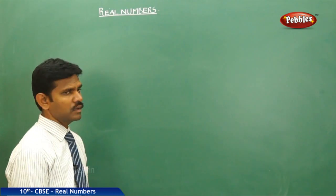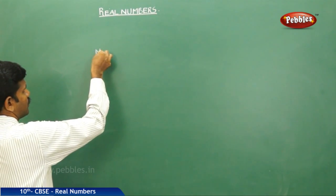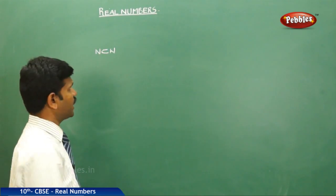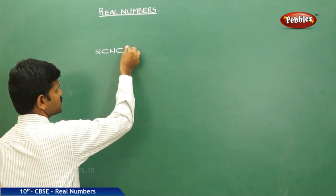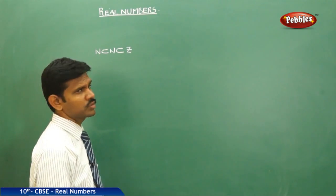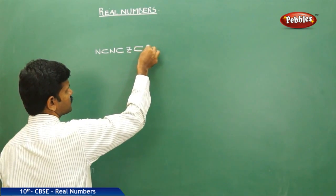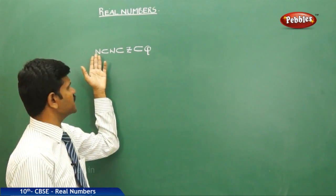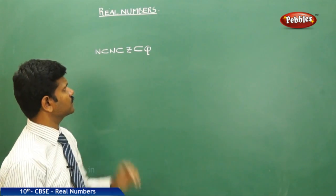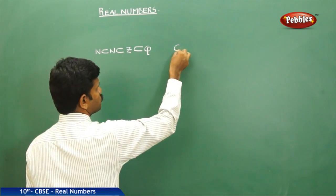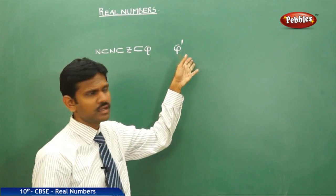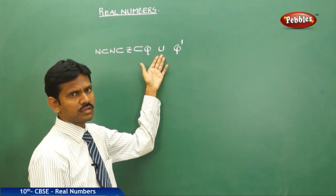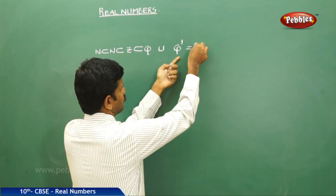From our previous knowledge, we can say that all natural numbers are whole numbers — natural numbers is a subset of whole numbers. All whole numbers are integers — whole numbers is a subset of integers. And all integers are a subset of the rational numbers. Q and Q dash are quite different from each other. Rational numbers union irrational numbers gives you real numbers.